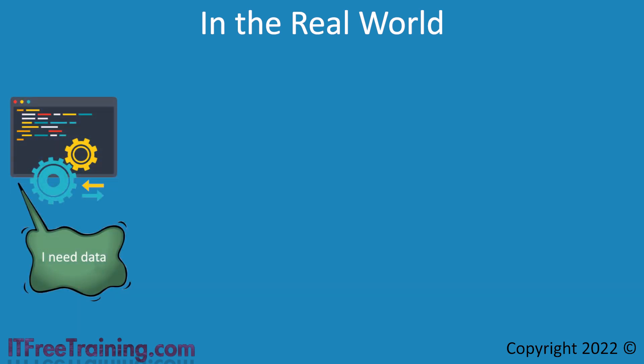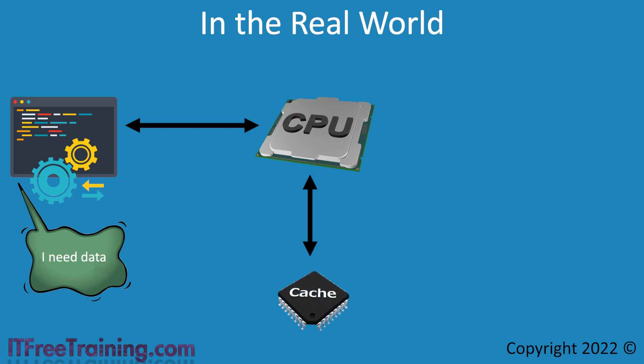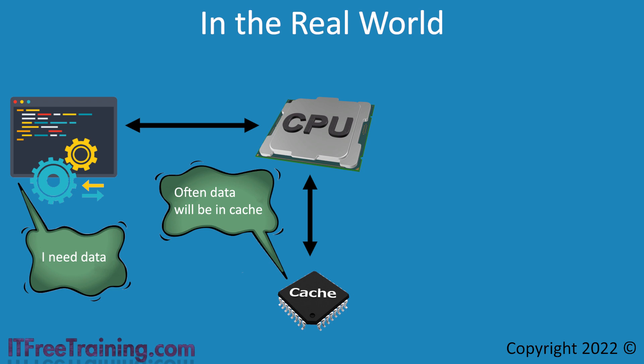So in the real world, does configuring multi-channel make much of a difference? To understand this, consider how memory gets used by a computer system. An application running on a computer requires memory to run and will request memory via the CPU. The CPU will first check its cache to see if it has the required memory. Often the data will be in the cache, because the CPU transfers a block of memory at once into the cache. Applications will often request memory that is near to where the last memory was requested — like reading a book sequentially. For this reason, most memory requests are fulfilled by the CPU getting the required memory out of its cache.